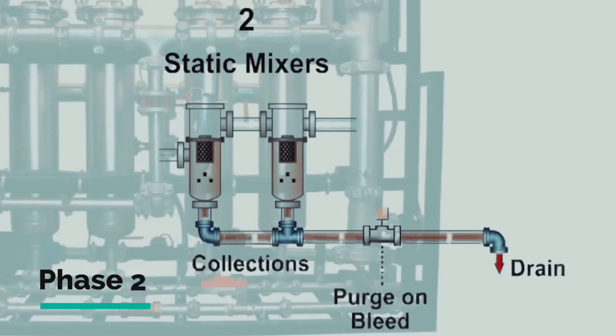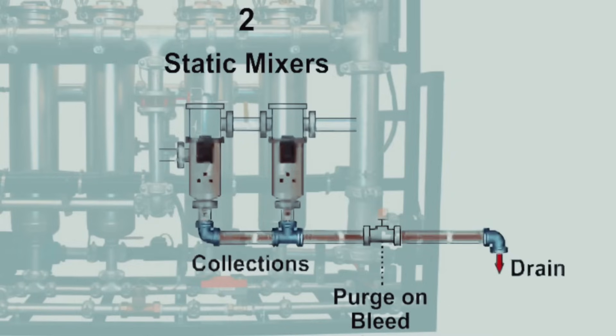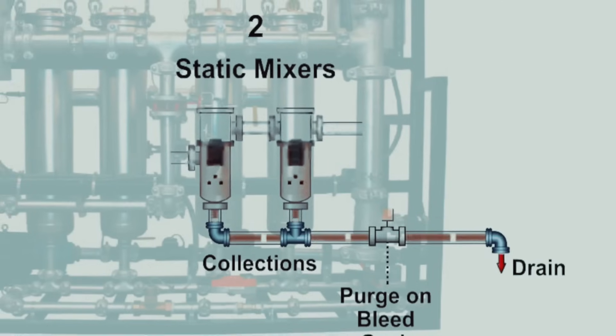Phase 2 is the static mixer debris removal process. The smaller suspended particles have now grown larger to a critical mass, causing them to precipitate into static mixers by gravity. These coagulated solids precipitate through a steel mesh media to the bottom of the static mixer vessels and are later purged to drain during regular system bleed cycles.